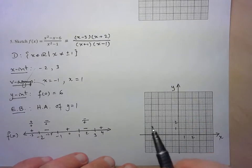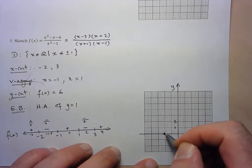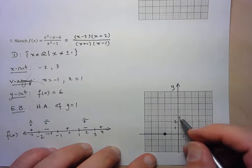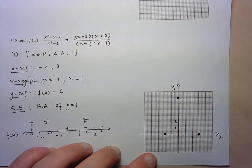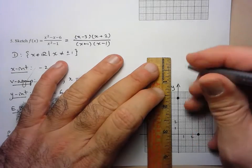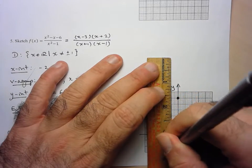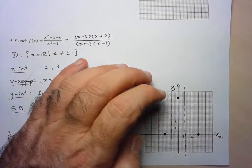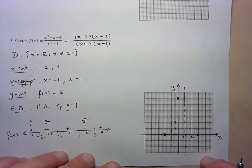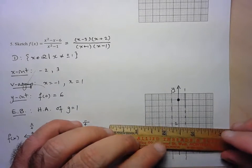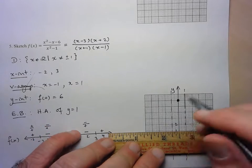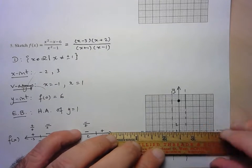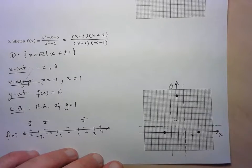Let's place our structural elements. X-intercepts at x = -2 and x = 3. Y-intercept at y = 6. Vertical asymptotes as dashed lines at x = -1 and x = 1. And finally the horizontal asymptote at y = 1 — remember this only governs end behavior; the function can do anything in the middle.